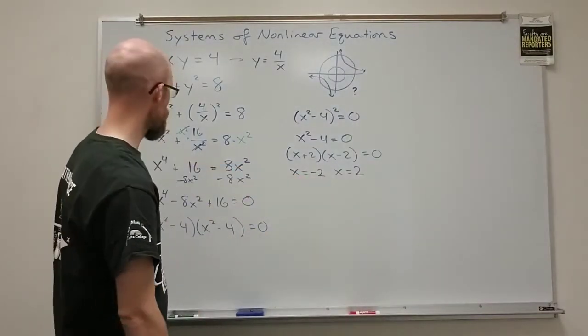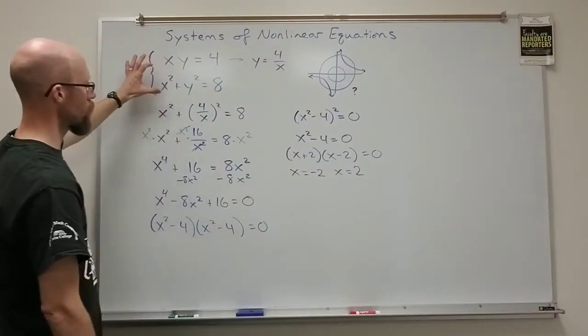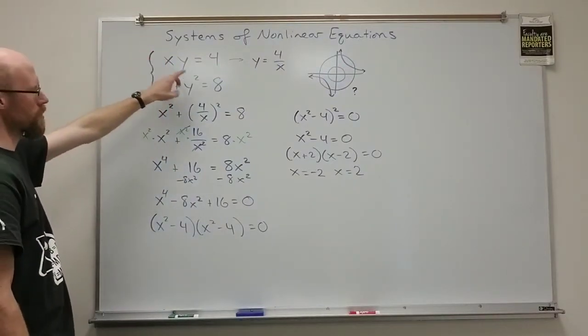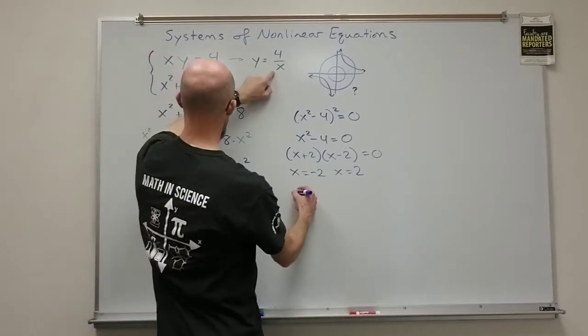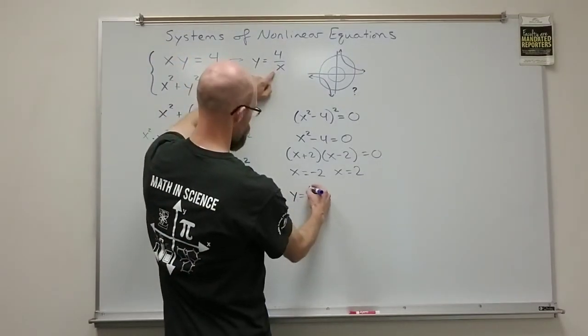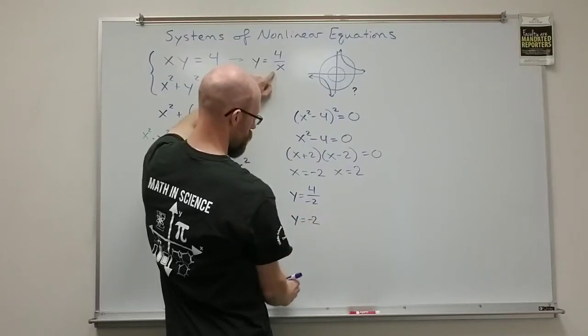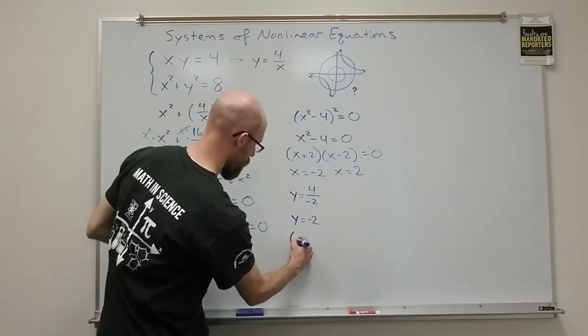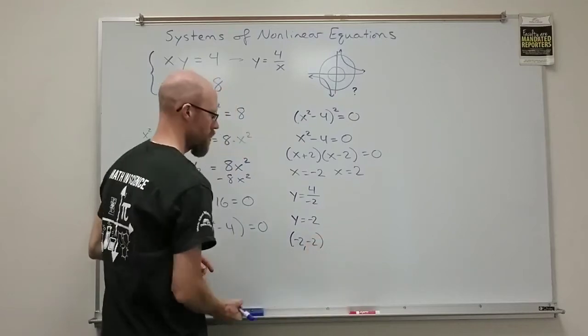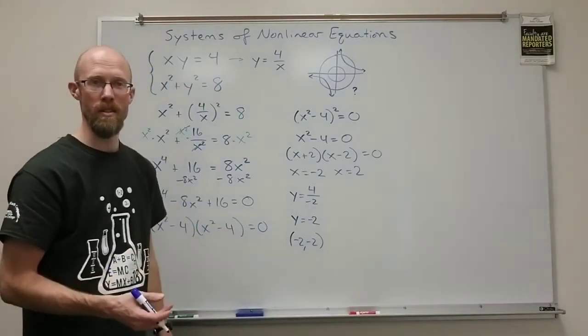But let's see what happens. If I plug in the negative 2, and it doesn't matter which equation I use, I'll go to the top one because I think that's going to be easier to solve for. So, y equals 4 over negative 2, which is negative 2. That gives me the point negative 2, negative 2. Aha. Things are starting to make more sense now.